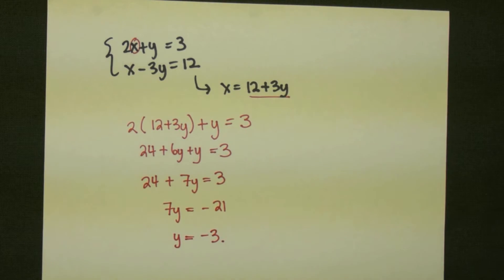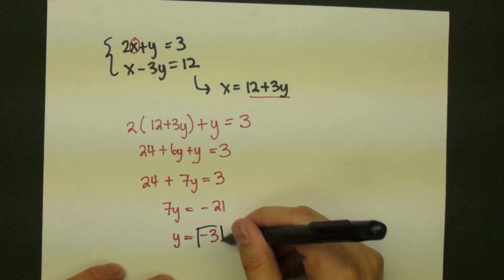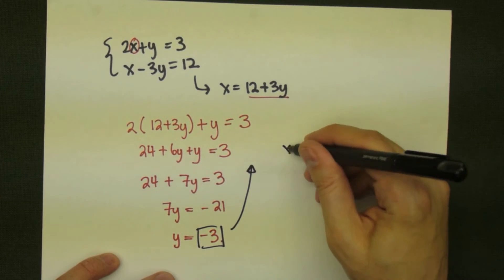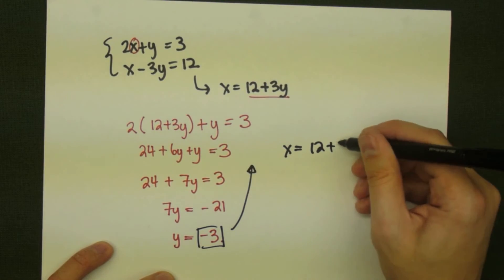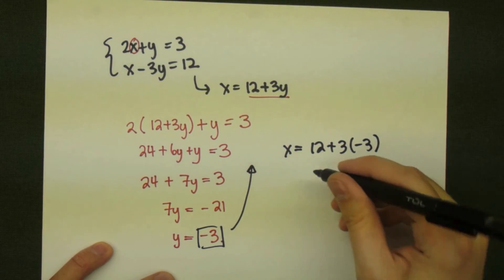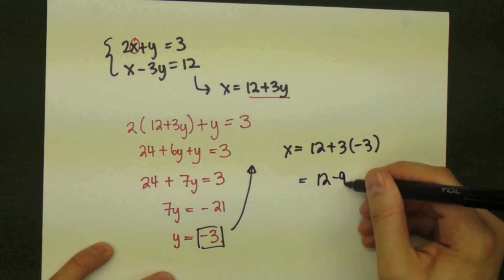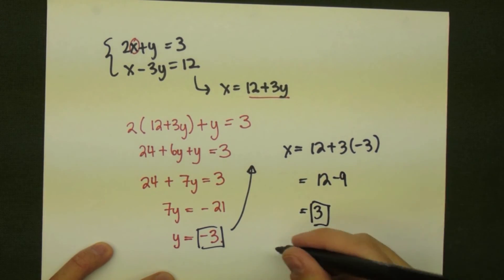After solving this, we get a y value, y is equal to negative 3. We now take that y value and plug it back into what we found as our solution for x. So x is going to be 12 plus 3 times negative 3, and we solve that down. And we get our x value, x is equal to 3.